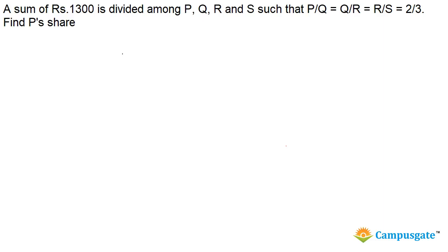In this question we need to divide Rs. 1300 among P, Q, R, S based on some equations. First we find the common ratio among P, Q, R, S. It is given that P/Q = 2/3, so we write it as P:Q = 2:3. Also given that Q:R = 2:3.